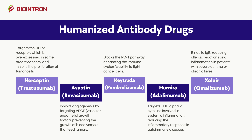Keytruda, or pembrolizumab, blocks the PD-1 pathway, enhancing the immune system's ability to fight cancer cells. Anzolair, or omelazumab, binds to IgE, reducing allergic reactions and inflammation in patients with severe asthma or chronic hives.